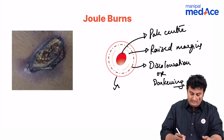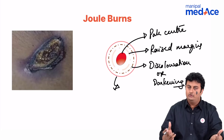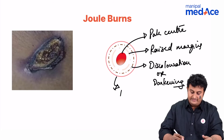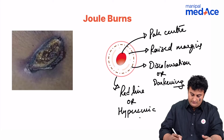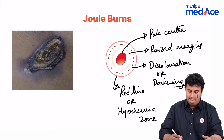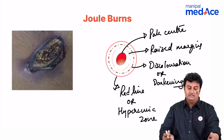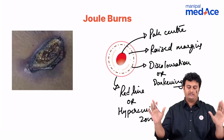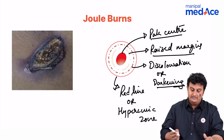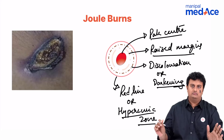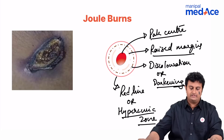Then you have an area outside. We know it is an injury which has happened on the body, so what is the body going to do? It is going to respond with a red line or hyperemic zone. So now you know exactly what a jewel burn looks like. Going from inside out: you have a pale center, surrounded by raised margins, surrounded by darkening, surrounded by a hyperemic zone. Hopefully this was clear.